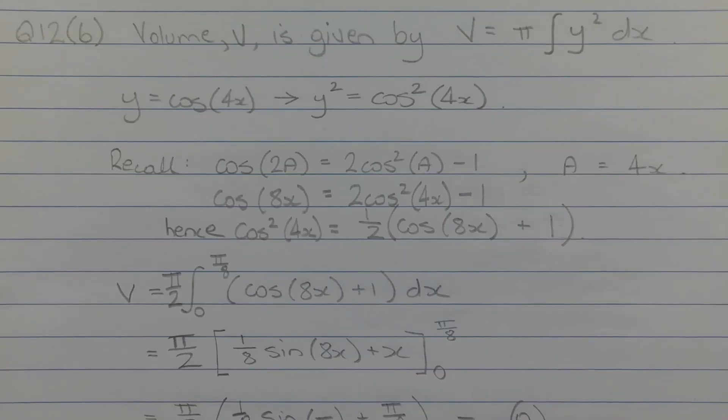Since the direction of rotation is about the x-axis, the volume V is given by the formula V equals pi times the integral of y squared dx, where y is equal to cos 4x. So y squared is equal to cos squared 4x.